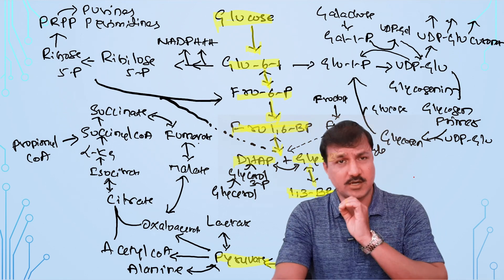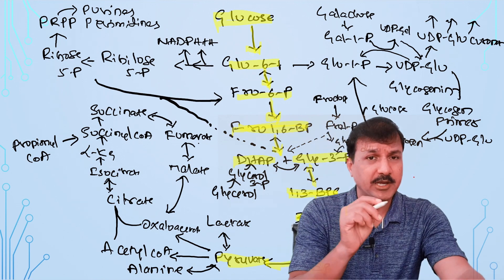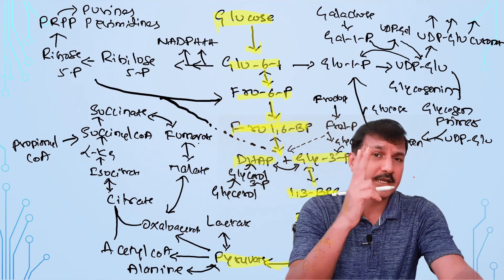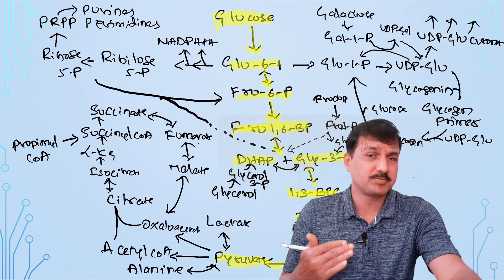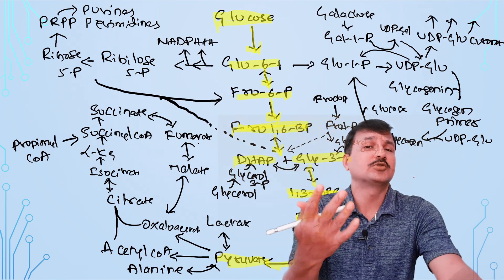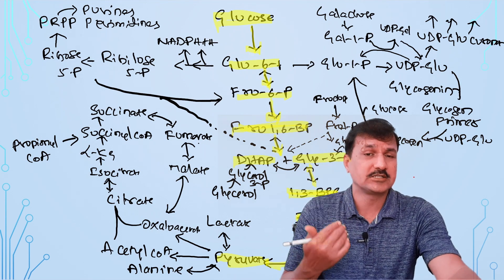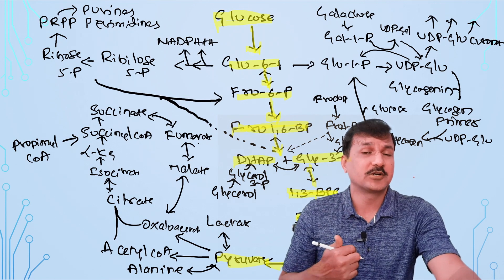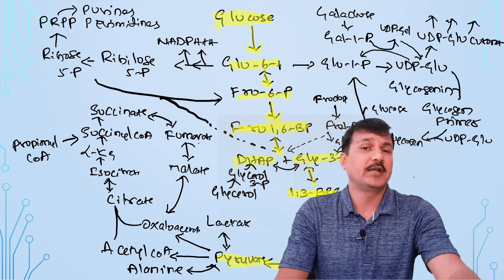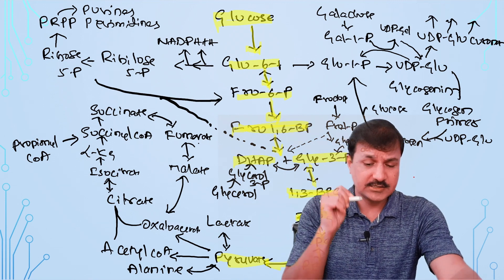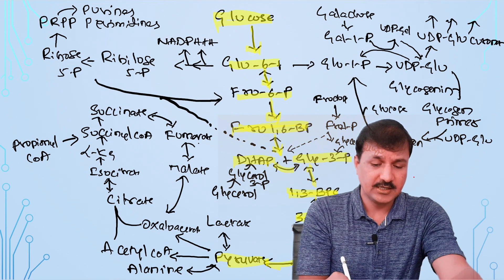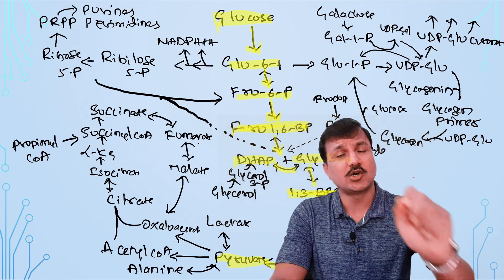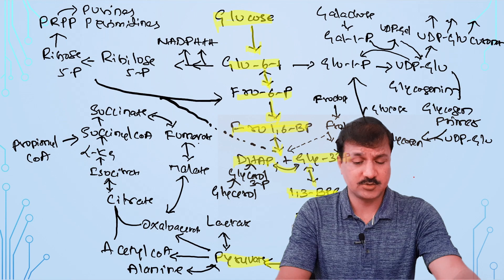Glucose is a 6-carbon molecule and pyruvate is a 3-carbon molecule, so for every glucose there is formation of 2 pyruvates. Therefore, 2 NADH+H⁺ are generated at the glyceraldehyde-3-phosphate dehydrogenase step, 2 ATP at the phosphoglycerate kinase step, and 2 more ATP at the pyruvate kinase step, because dihydroxyacetone phosphate is converted back into glyceraldehyde-3-phosphate.